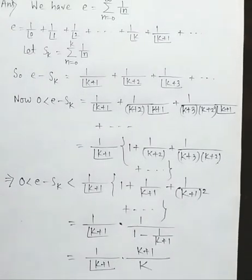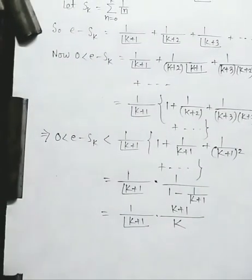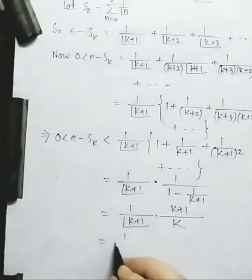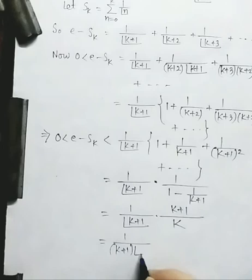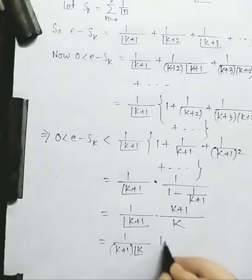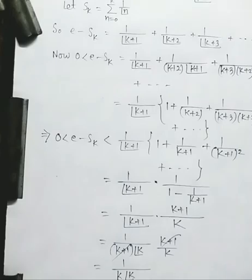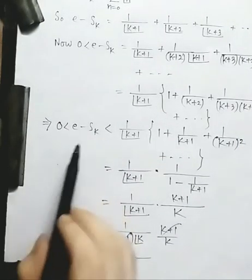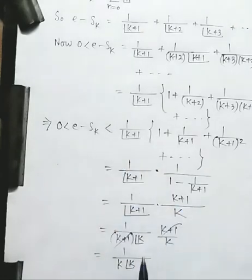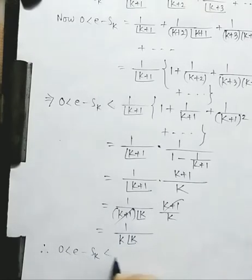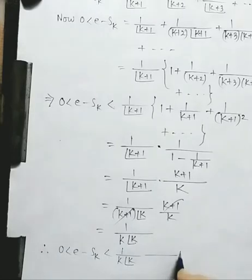So we can write this as 1 by factorial of k plus 1 into 1 by 1 minus 1 by k plus 1. Now this equals 1 by factorial of k plus 1 into k plus 1 by k, and we can write factorial of k plus 1 as k plus 1 into factorial of k. Cancelling k plus 1, this simplifies to 1 by k into factorial of k. So we get 0 less than e minus S_k less than 1 by k into factorial of k. We name this inequality (1).